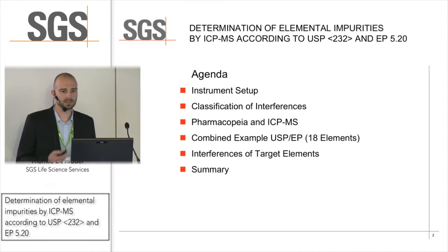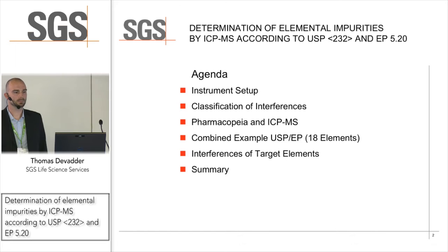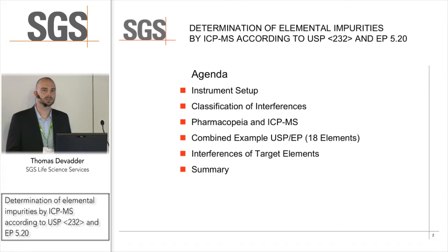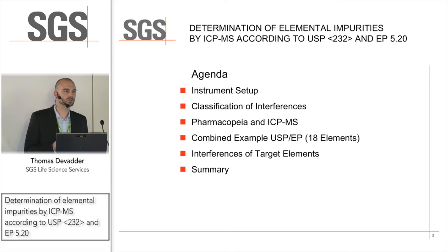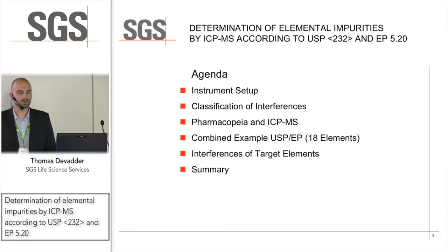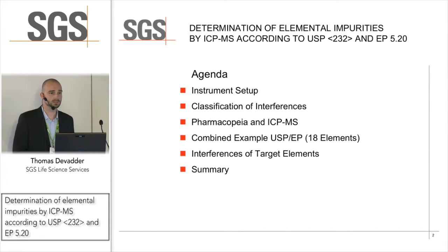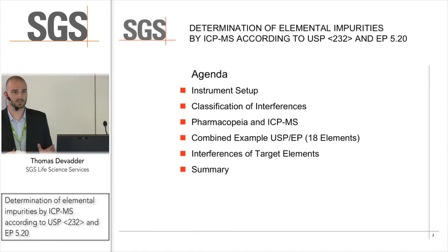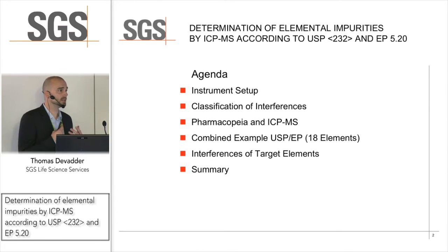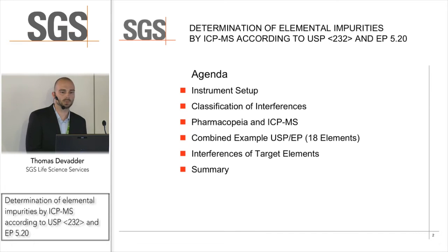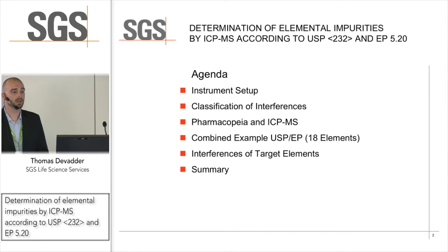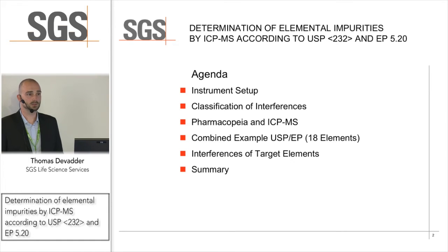Just to have a quick overview of what I'm planning to talk about today. There are many presentations at the moment going on in magazines and webinars, and my approach will be to take a closer look at what has to be done in the lab. I'd like to talk about quadrupole ICP-MS and the classifications of interferences, because ICP-MS always comes with interferences — it's a big topic. I'll show you what's currently in pharmacopoeias and a combined example of testing for USP and EP compliance in a single run, including the expected interferences on our target elements.